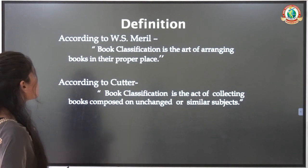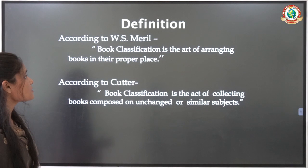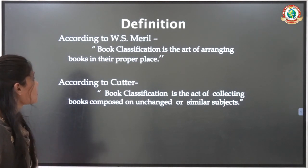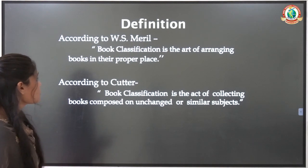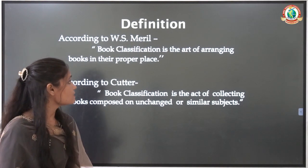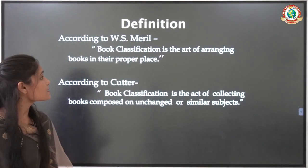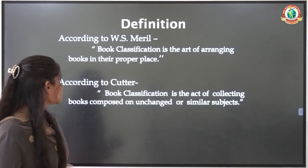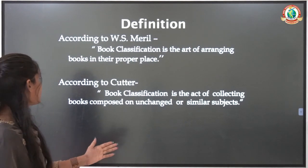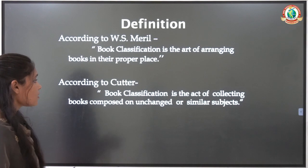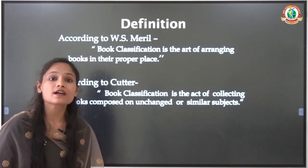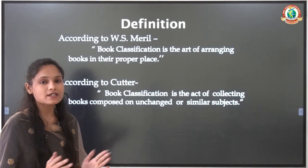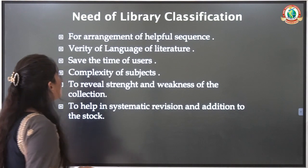According to W.S. Marin, book classification is the art of arranging books in their proper place. According to Cutter, book classification is the act of connecting books and arranging them according to similar subjects. This is what we call library classification or book classification.